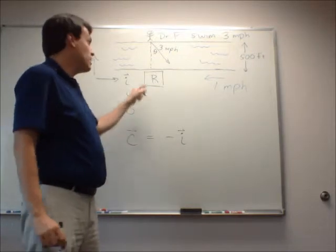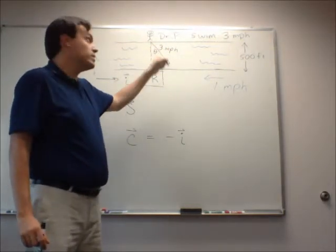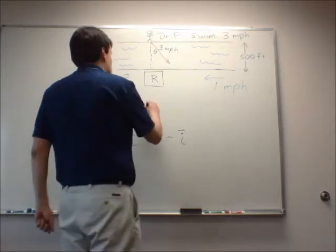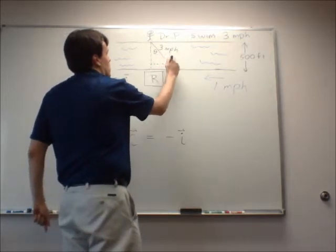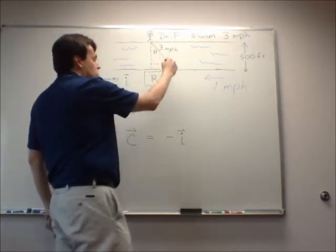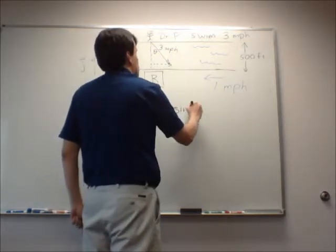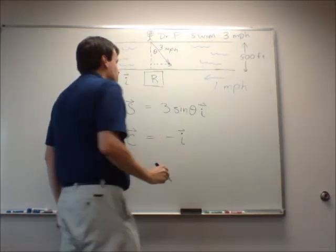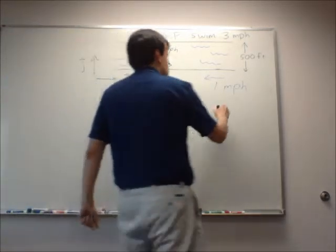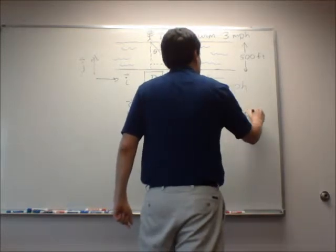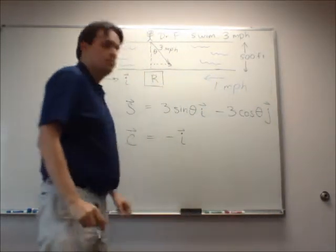Alright, my swimming velocity is a little bit more complicated because it's going to go at an unknown angle. I'm assuming that I haven't solved the problem already. My swimming velocity is going to have a rightward component, which is equal to 3 times the sine of theta i, and a component downward or in the negative j direction that's equal to minus 3 cosine theta j.